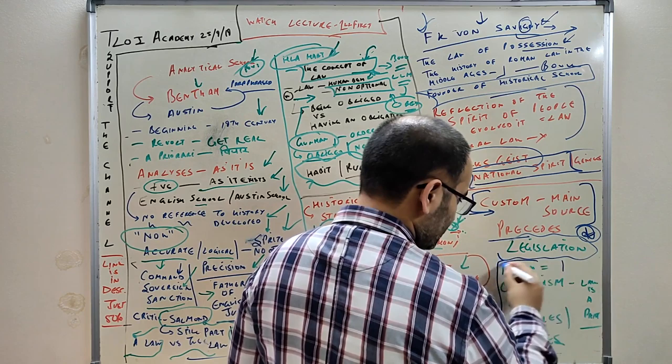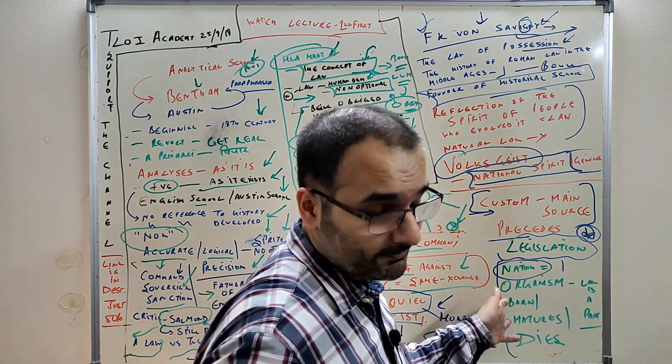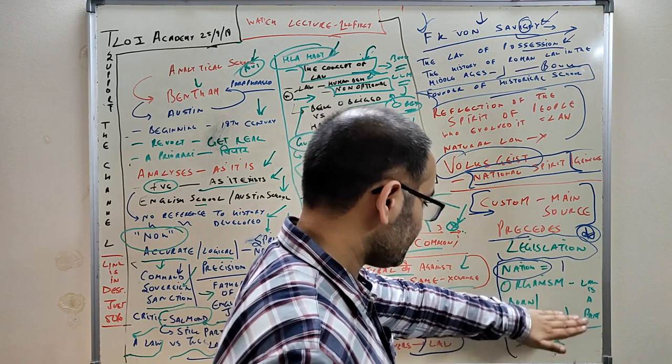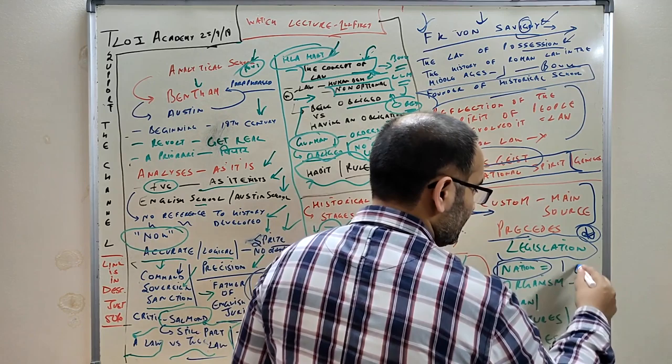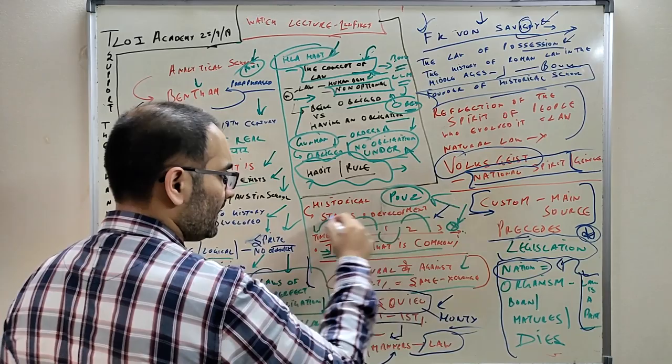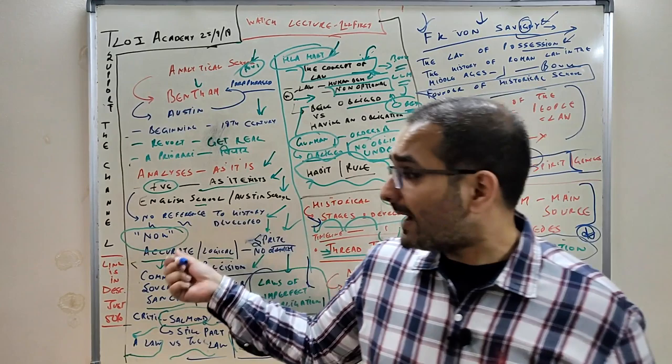Savigny considered the nation - write this, mark it - the nation is an organism which is born, matures, and dies off, and law is a part of this organism. He was looking at it in a very broader sense, taking the timeline. So you can expand the historical school this way, and expand the analytical school with the previous video plus this video, and get twenty marks answers.